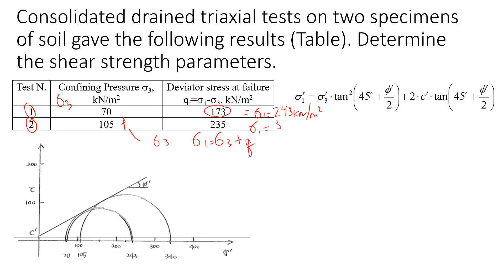What we'll do next is we will draw a Mohr circle for each test. For the first test, sigma 3 will be 70, and it's already drawn here. Look at this schematic diagram which is actually drawn to scale. Don't forget to use units, and here we also use units kilonewtons per square meters.